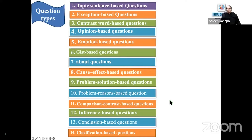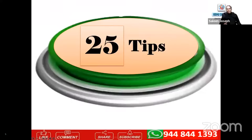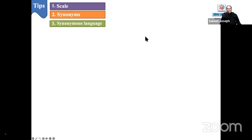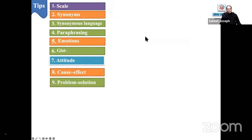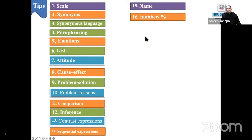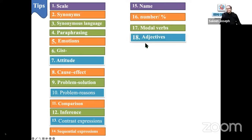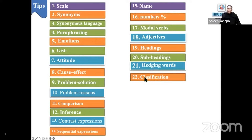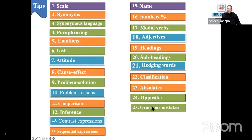Number fourteen: classification based questions — these are the only types of questions that can appear in OET. We'll be looking into each one in each session. We also have 25 tips or strategies to tackle these 14 types: scale, synonyms, synonymous language, paraphrasing, emotions, gist, attitude, cause and effect, problem solution, problem reasons, comparison, inference, contrast expressions, sequential expressions, name, number or percentage, modal verbs, adjectives, headings, subheadings, hedging words, classification, absolutes, opposites, and grammar mistakes.